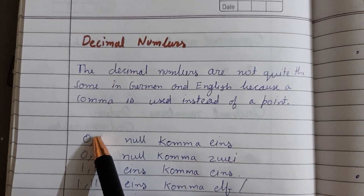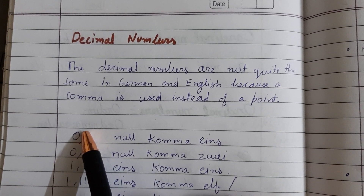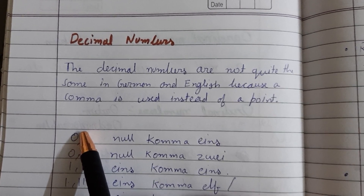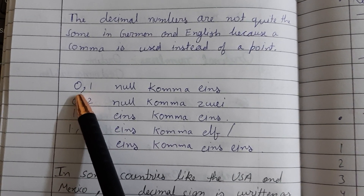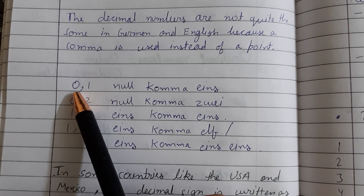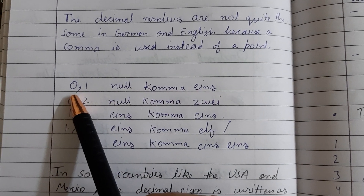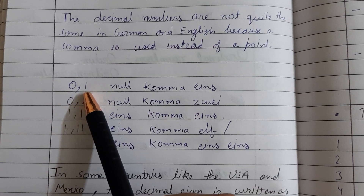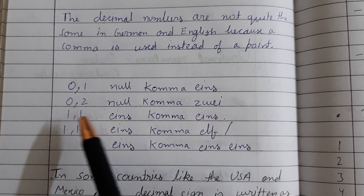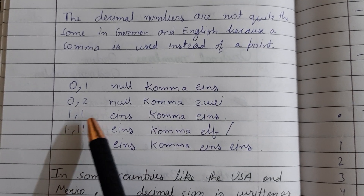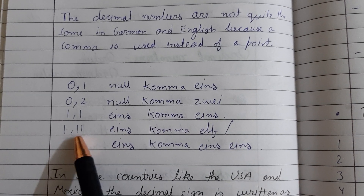Decimal numbers are not quite the same in German and English because a comma is used instead of a point. In German, 0.1 is written as '0 comma 1', spoken as 'null comma eins'. Similarly, 0.2 is 'null comma zwei', and 1.1 is written as '1 comma 1', spoken as 'eins comma eins'.